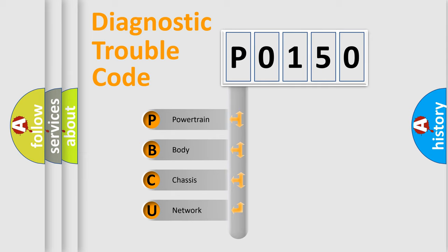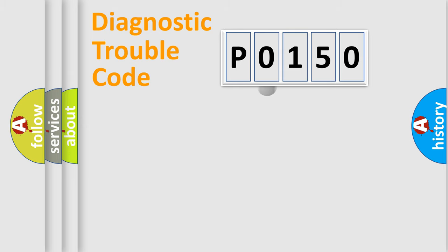We divide the electric system of automobile into four basic units: Powertrain, Body, Chassis, and Network. This distribution is defined in the first character code.